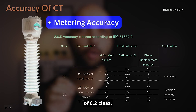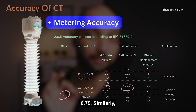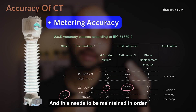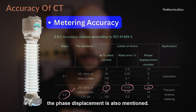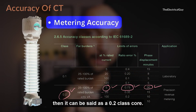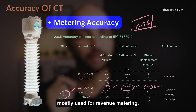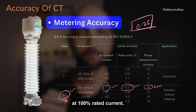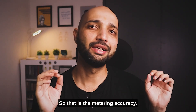For example, for the 0.2 class, the ratio error allowed at 5% of the rated current is 0.75. Similarly, values are defined for 20%, 100%, and 120% of the rated current, and these must be maintained to achieve 0.2 class accuracy. Phase displacement limits are also specified. Only when a core complies with all these requirements can it be called a 0.2 class core. Notably, 0.2S is the most accurate metering class and is mostly used for revenue metering. The names of accuracy classes are based on the ratio error allowed at 100% rated current.